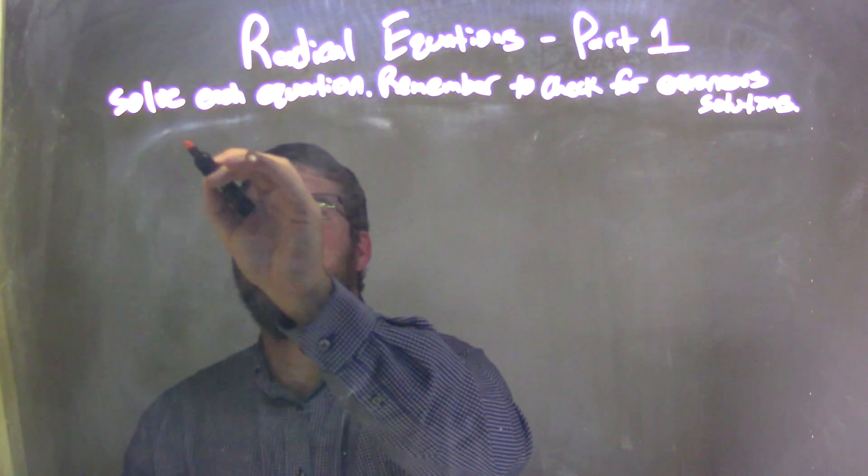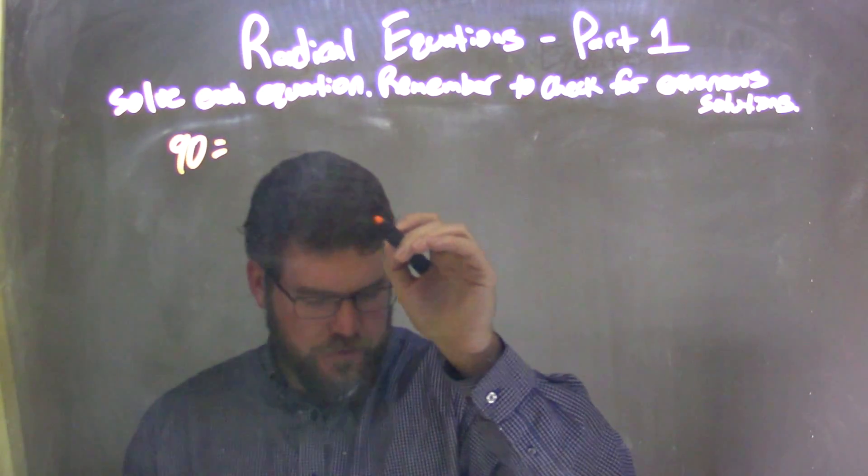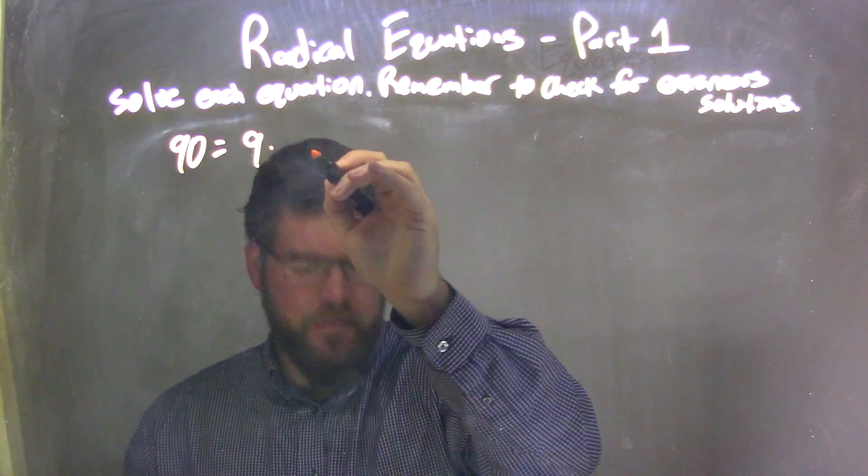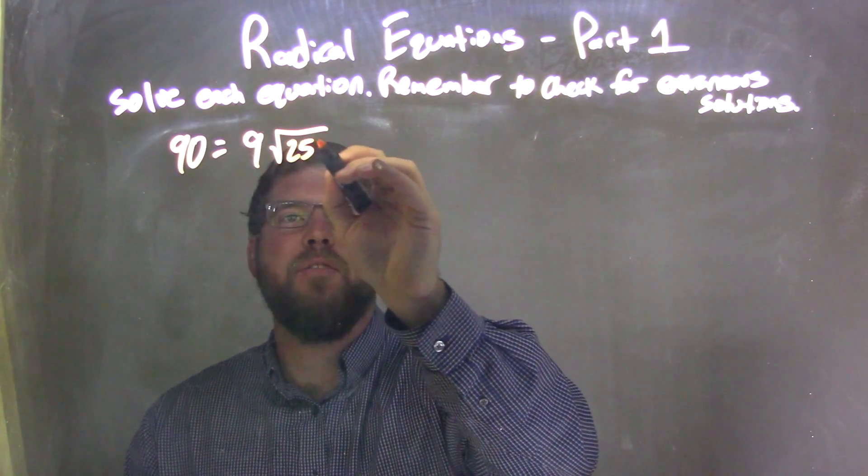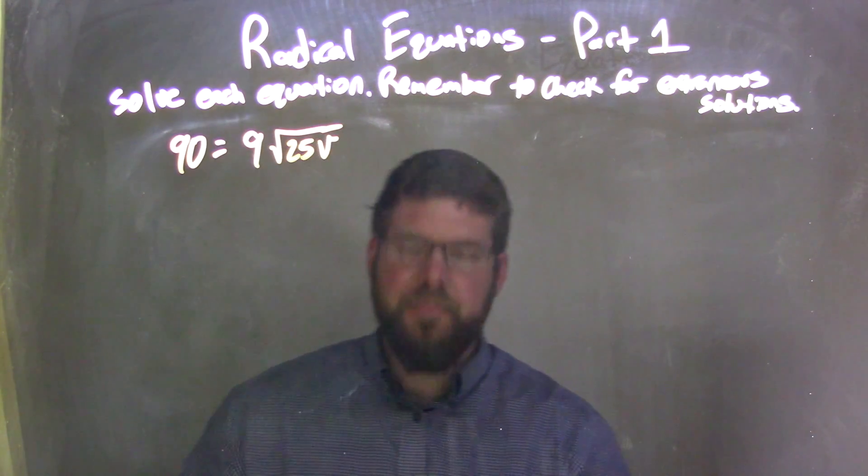If I was given this equation: 90 equals 9 times the square root of 25V. Now I want to simplify this.